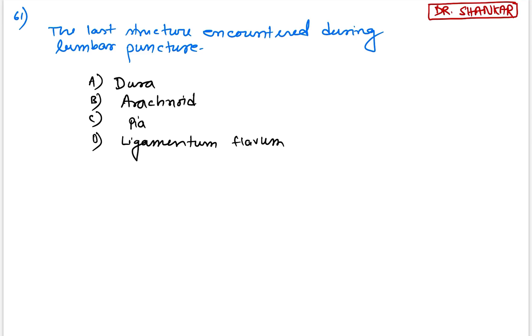Let's start with question number 61, the last structure encountered during lumbar puncture. What is the answer of this question? This is a very easy question and the answer is among the options, arachnoid. As you know, what are the structures that are pierced during lumbar puncture from superficial to deep?